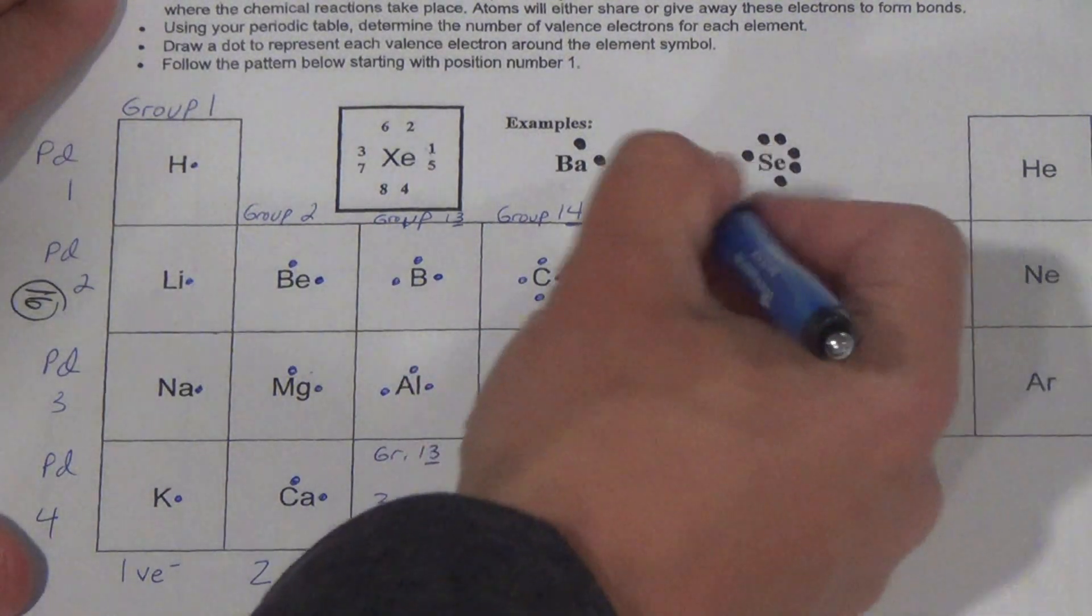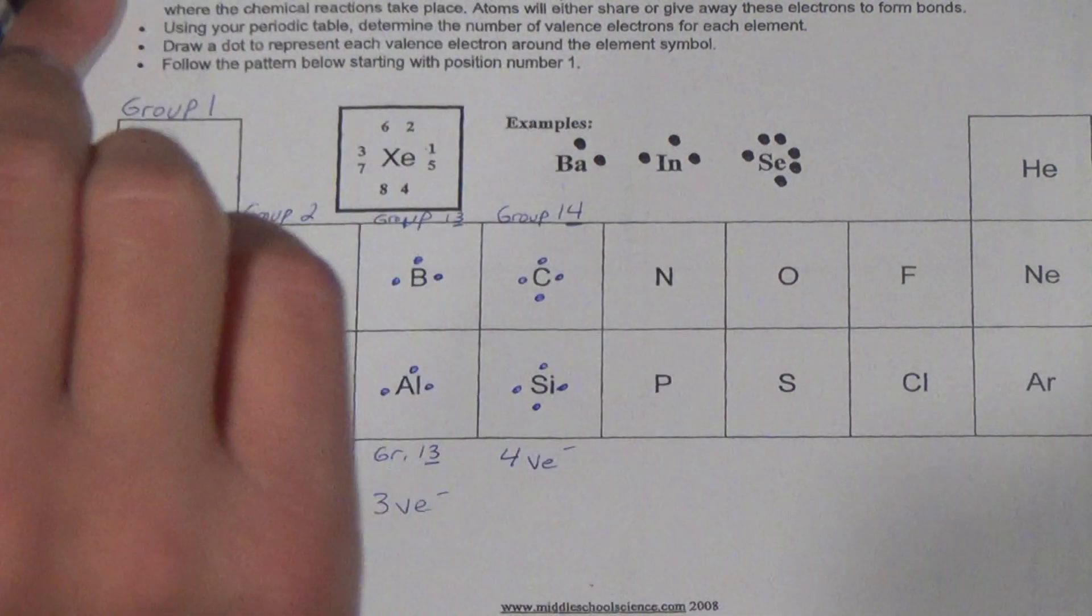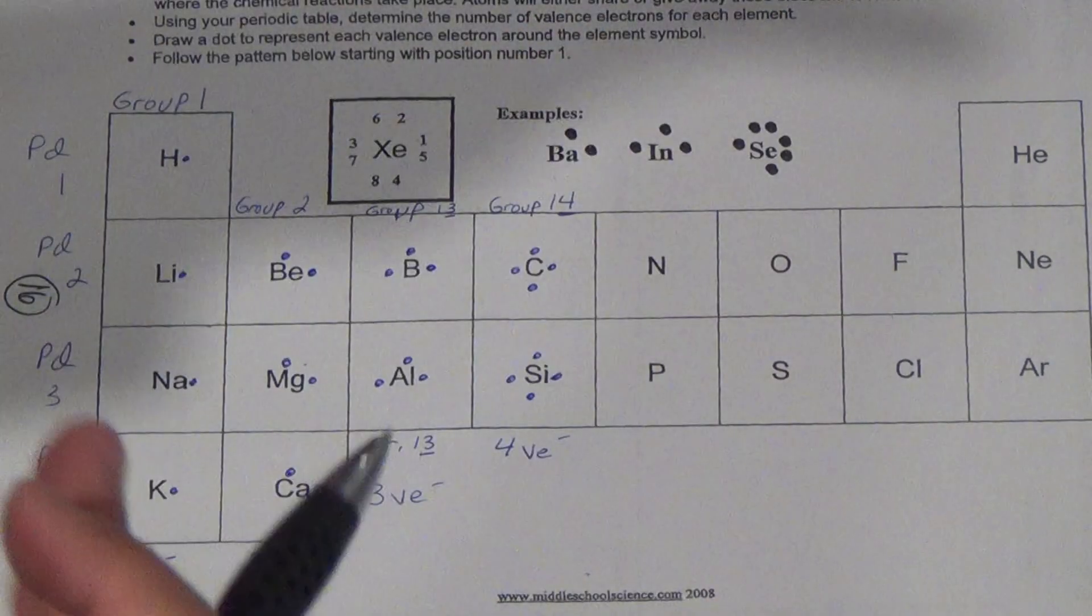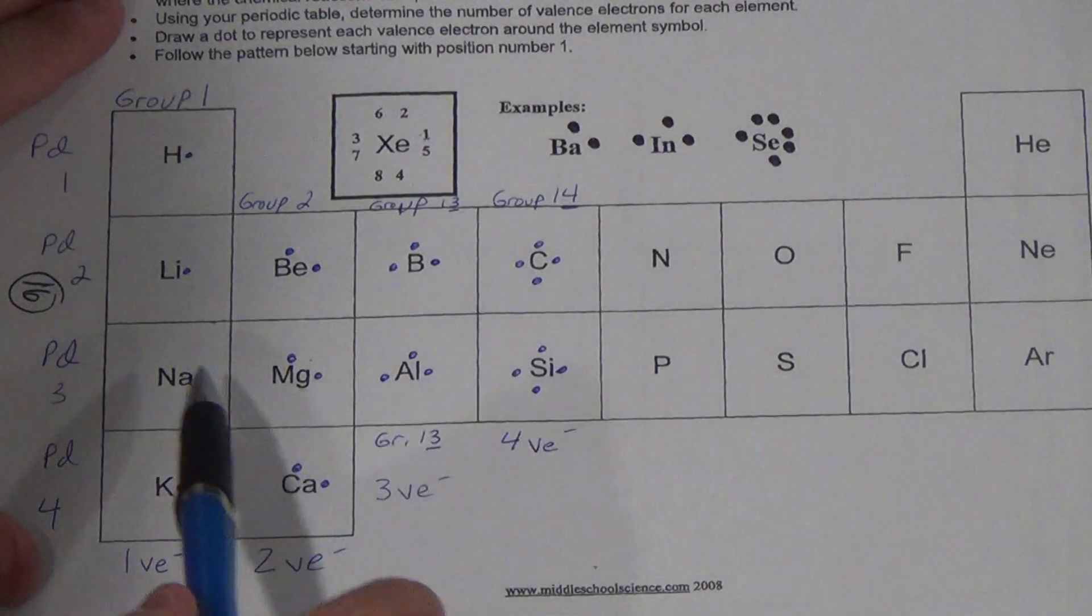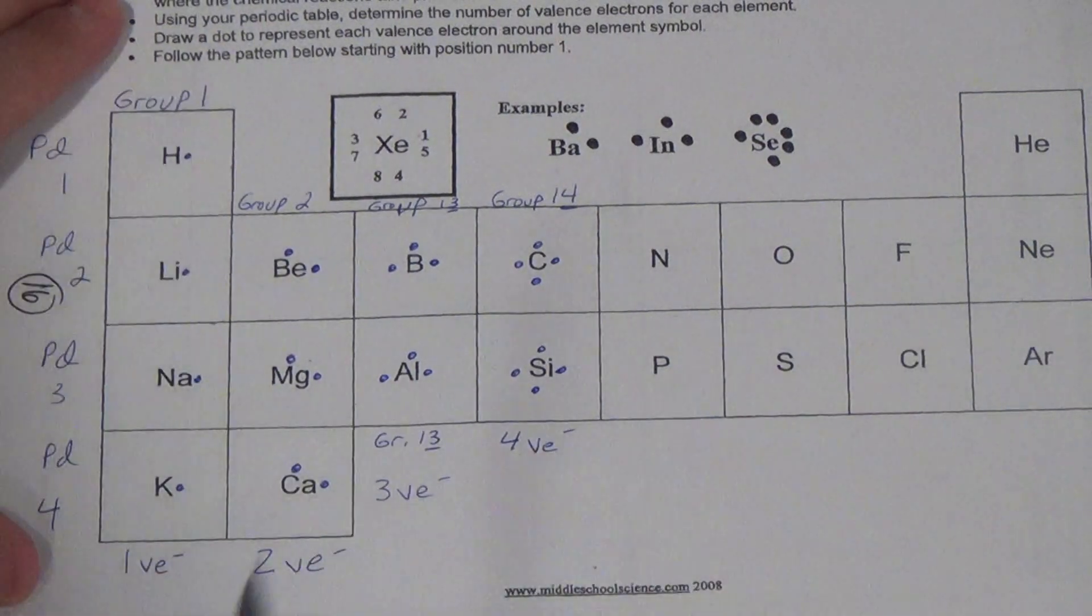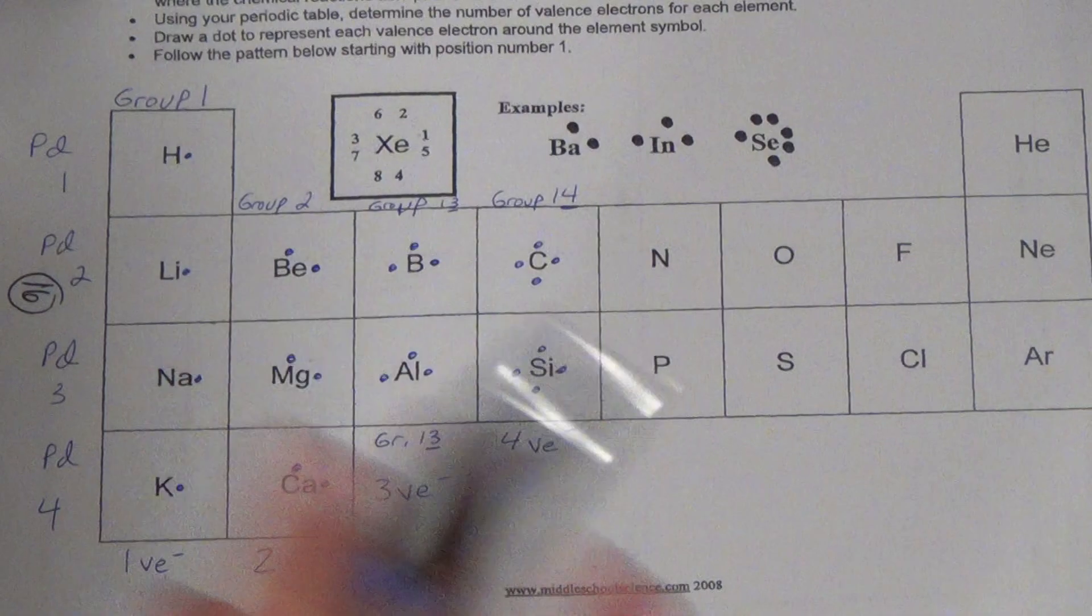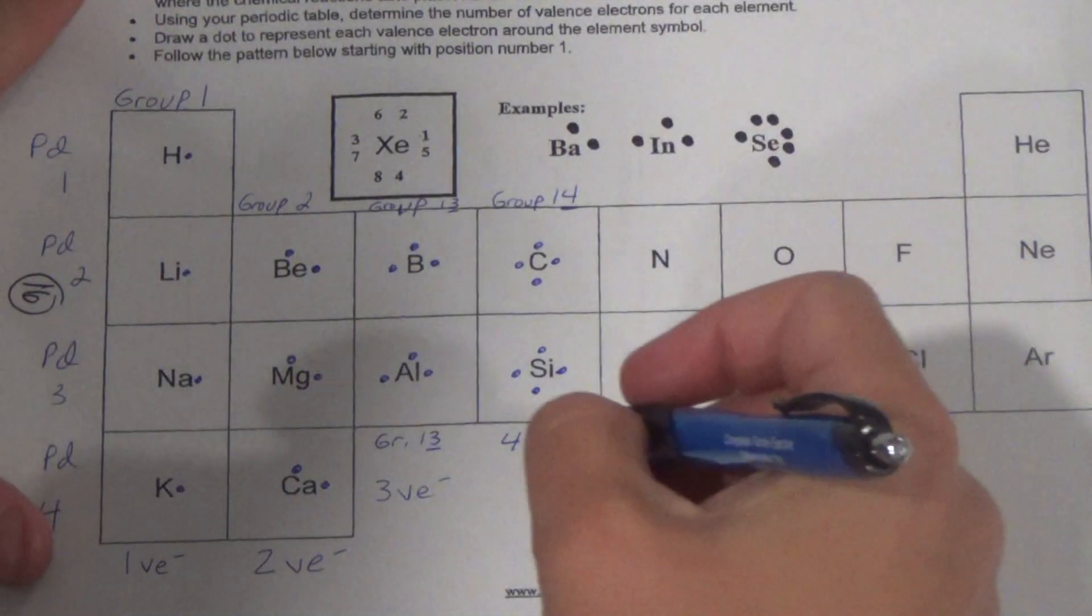And again, why do we care about the valence electrons? You're going to learn they're the ones, did you ever hear of like NaCl, which is sodium chloride? Eventually you're going to learn sodium has to give chlorine a valence electron, and because of that they kind of bond together. But that's next week, or the week after.